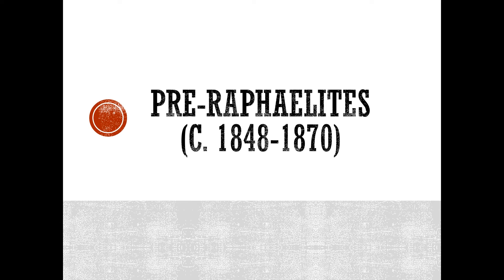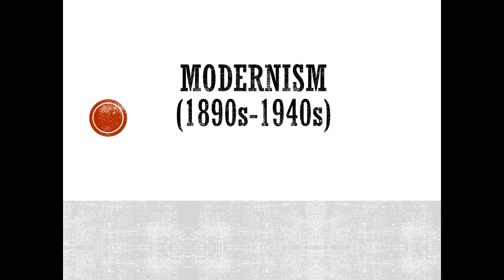Modernism is a literary and artistic movement that provided a radical break with traditional modes of Western art, thought, religion, social conventions, and morality. Major themes include the attack on notions of hierarchy and experimentation in new forms of narrative, such as stream of consciousness. High Modernism, the period from 1920 onwards, is generally considered the golden age of modernist literature, and saw the publication of James Joyce's Ulysses, T.S. Eliot's The Wasteland, and Virginia Woolf's Mrs. Dalloway.